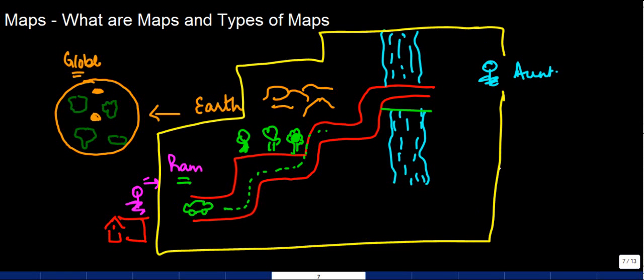When I draw all these things, this is something which is called a map. So this might be the actual thing, but if I draw it on paper, represent the surface of the earth - how the earth is, there are mountains over here, there are trees over here, there's a river over here and all these things - when we represent all these things on a piece of paper, that piece of paper is called a map.